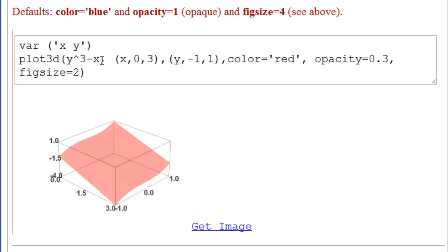Now we have seen the defaults are color equal to blue, and opacity equal to one, which is completely opaque, and the figure size equal to four. That's the size we saw. Here we have our declaration of our variables. Our same plot, y cubed minus x. We put them in the right order now.